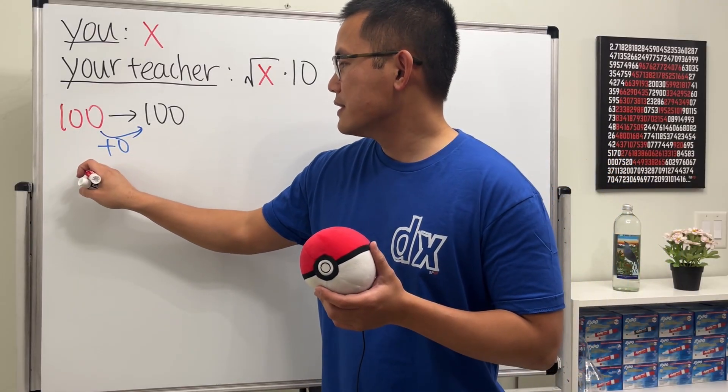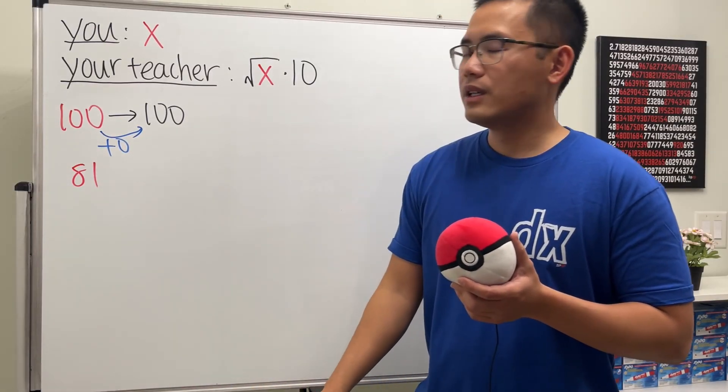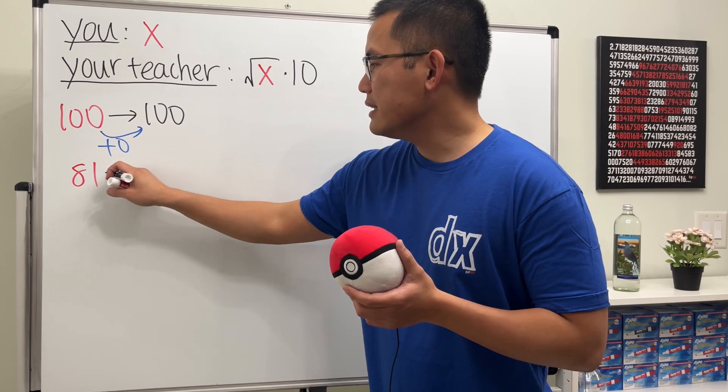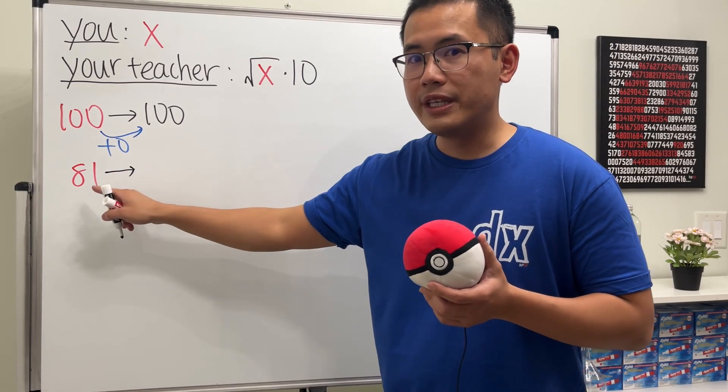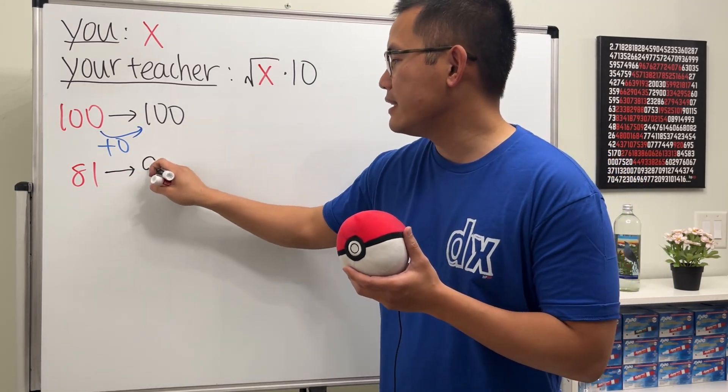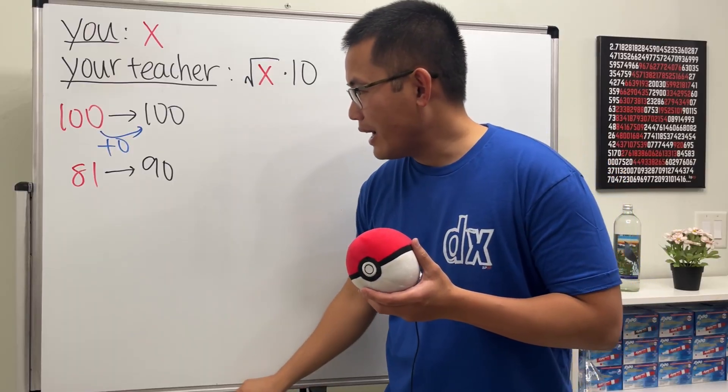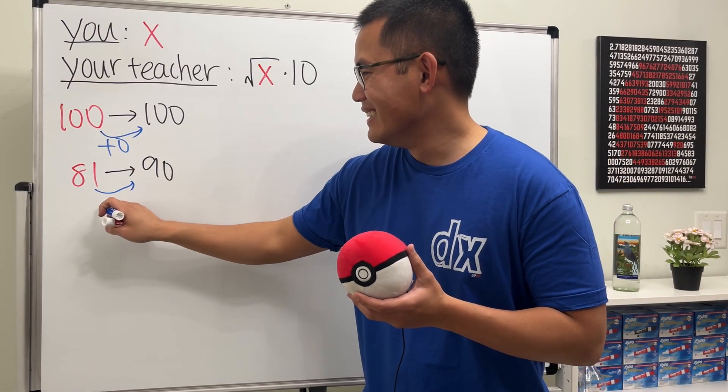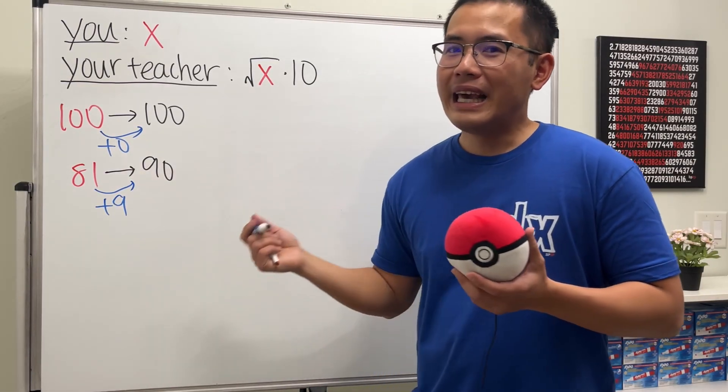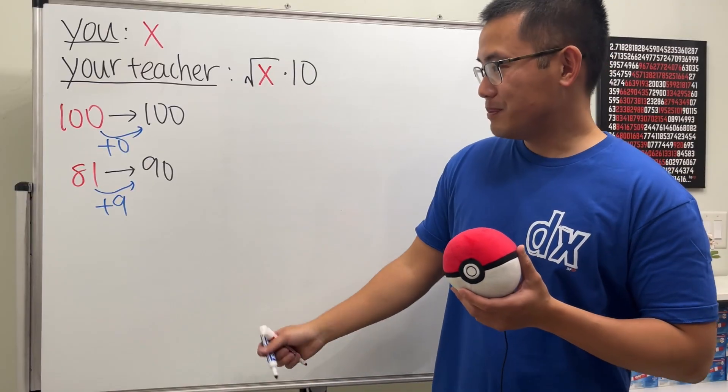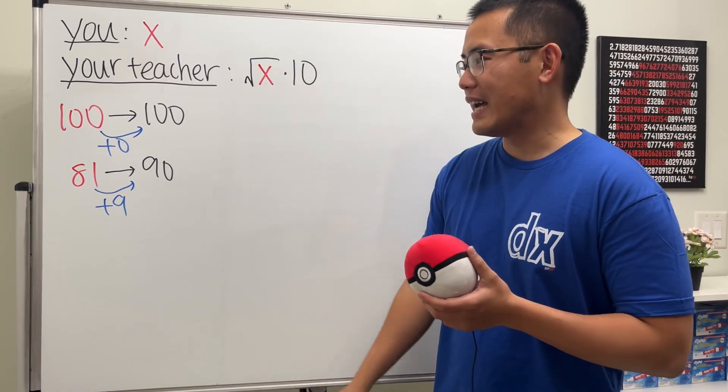However, if you take a look, if somebody gets 81, then in that case, once we take the square root, we get 9 and multiply by 10, we get 90. Hey, look, right here. Wow. We gain 9 points. So that's pretty good. That's a pretty good deal. I will take that, right?